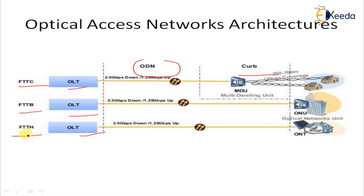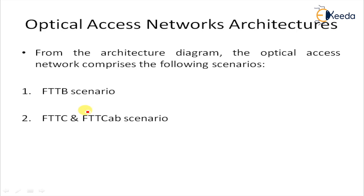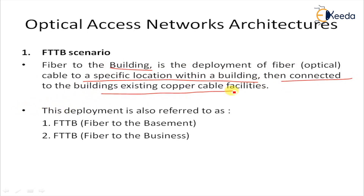From the architecture diagram, three scenarios are available: FTTB scenario, FTTC or FTTC cab scenario, and FTTH edge scenario. Starting with FTTB — Fiber to the Building — this is a deployment of fiber optic cable to a specific location within a building, then connected to the building's existing copper cable facility, providing service to homes or parts of a society.